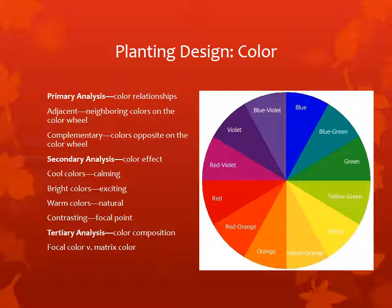Let's start with color. There are three analyses of color within planting design. First is the primary analysis, or color relationships. Adjacent color relationships are those colors that are neighboring on the color wheel, such as blue and blue-violet, or blue and violet. Complementary colors are colors that are opposite on the color wheel, such as blue and orange, or violet and yellow. Secondary color analysis is the color effect — the effect that color has on the observer. Cool colors typically create a calming influence, whereas bright colors elicit excitement. Warm colors typically evoke a natural feel in the landscape.